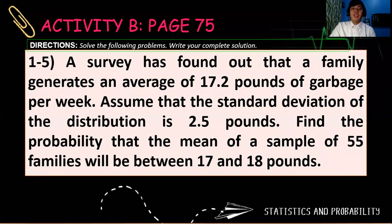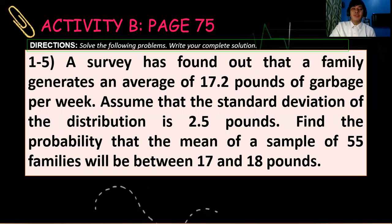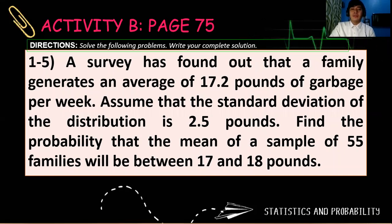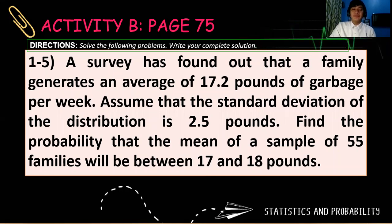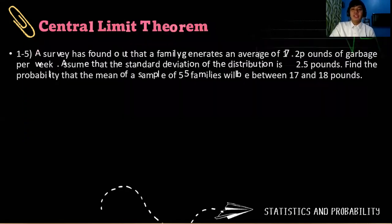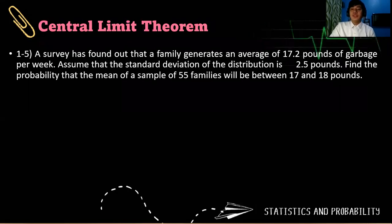Let's talk about activity B on page 75 of your CIPA. A survey has found out that a family generates an average of 17.2 pounds of garbage per week. That's a lot of garbage. Assume that the standard deviation of the distribution is 2.5 pounds. Find the probability that the mean of a sample of 55 families will be between 17 and 18 pounds. So to answer that, we have two values for x.